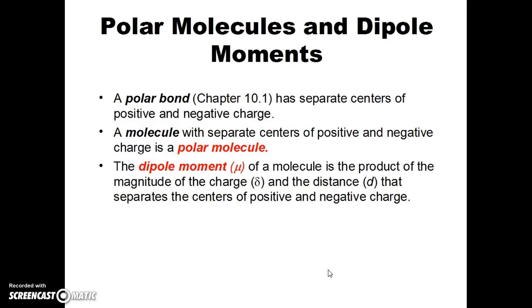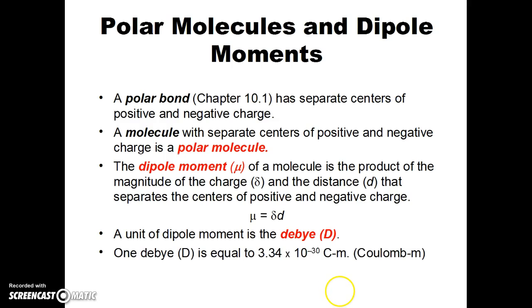The dipole moment, symbolized by the Greek letter mu, is the product of the magnitude of the charge and the distance. The distance is what separates the centers of positive and negative charge. It's measured in meters. The unit of dipole moment is the Debye, and charge times distance equals the dipole moment. One Debye is 3.34 times 10 to the negative 30th coulomb meters.